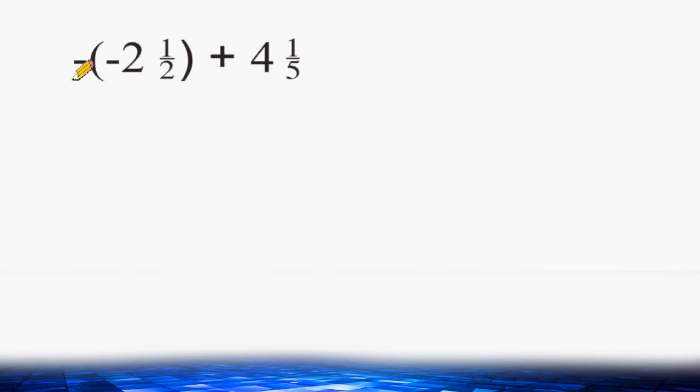Now remember, when you have consecutive negatives, you have to treat that as a positive, so we can rewrite this problem as 2 and 1 half being added to 4 and 1 fifth.